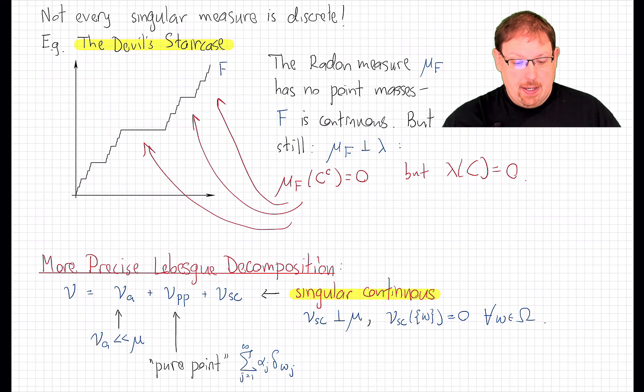So here's an update to the Lebesgue decomposition theorem. If mu and nu are sigma finite measures on a measurable space, then nu has a Lebesgue decomposition with respect to mu that is unique, and can be broken up into three parts. It has an absolutely continuous part, which therefore has a density. It has a pure point part, which is a positive combination of countably many point masses, and it has a singular continuous part, like this bad boy up here.